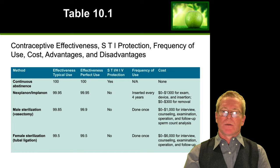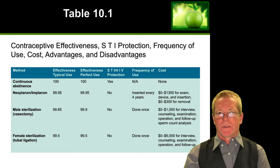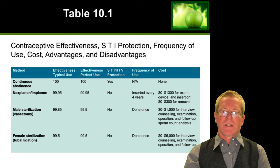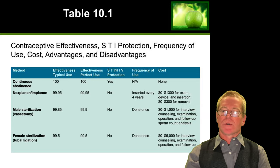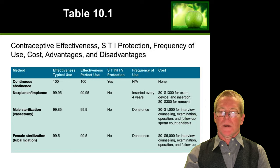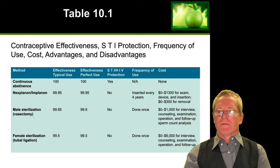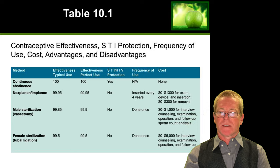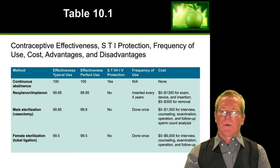What are some contraceptive methods and their effectiveness? Abstinence is 100% effective at preventing both pregnancy and sexually transmitted infections. Hormonal methods like Implanon are very effective at preventing pregnancy but do not protect against sexually transmitted diseases or HIV. Male vasectomy is also very effective at preventing pregnancy but does not prevent sexually transmitted diseases. Female sterilization is likewise very effective, but again provides no protection against sexually transmitted diseases.